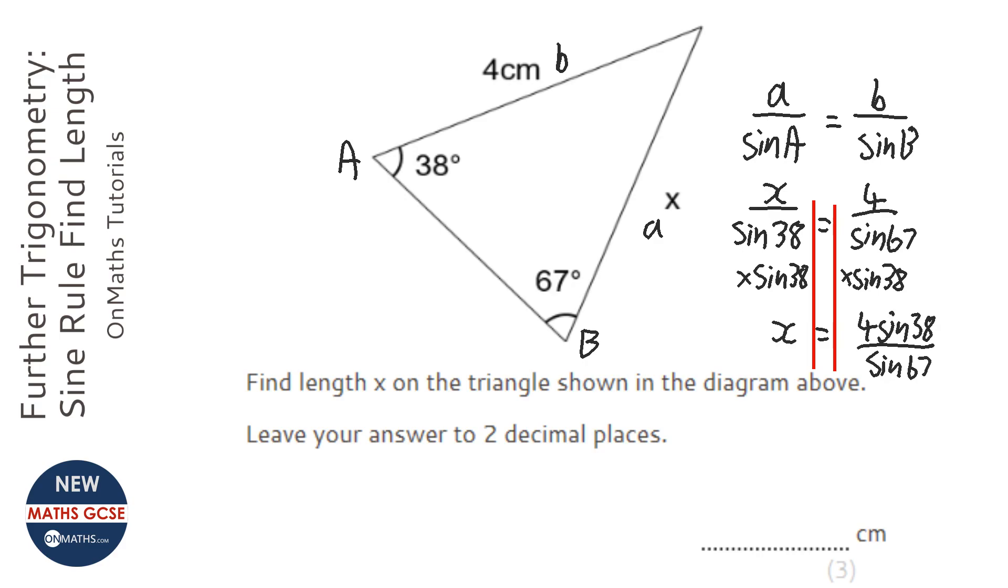Let's get my calculator. 4 sine 38 over sine 67. And it gives me the answer of 2.6753 and so on. And it's two decimal places, that would be 2.68.